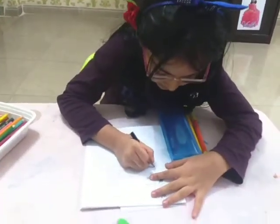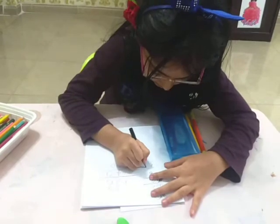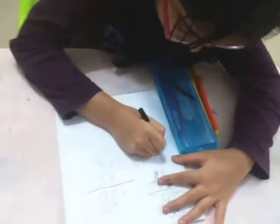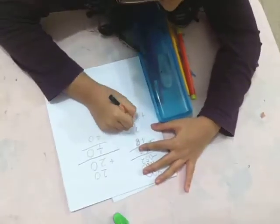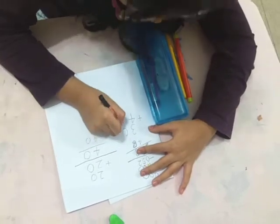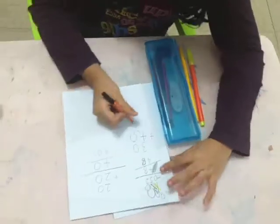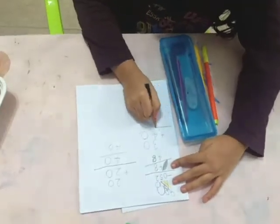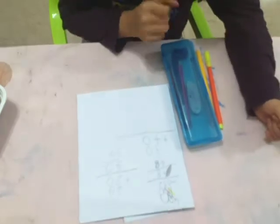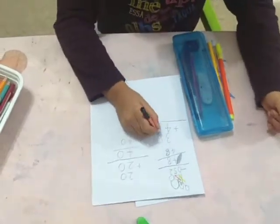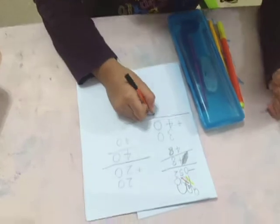So, I'm going to write 30 plus 40. Okay? Now, I'm going to do a big, big, big slash.